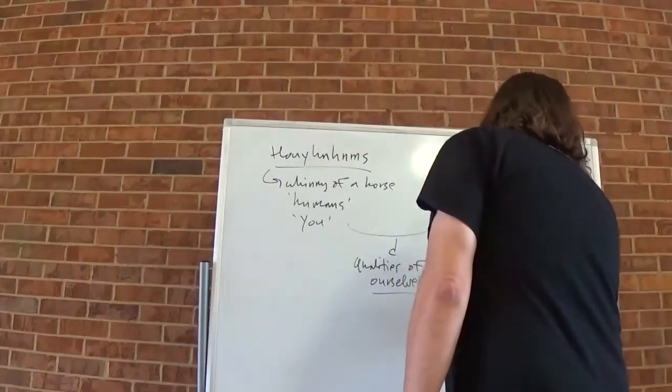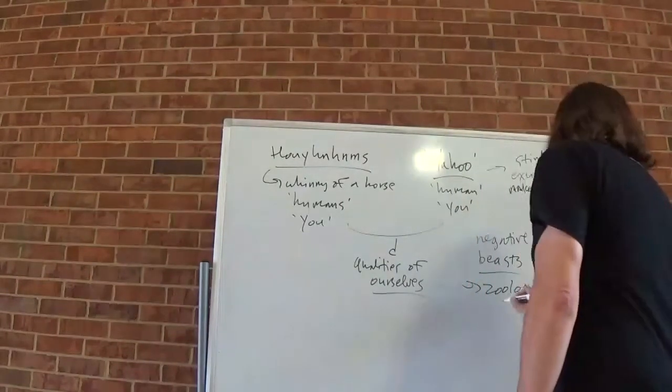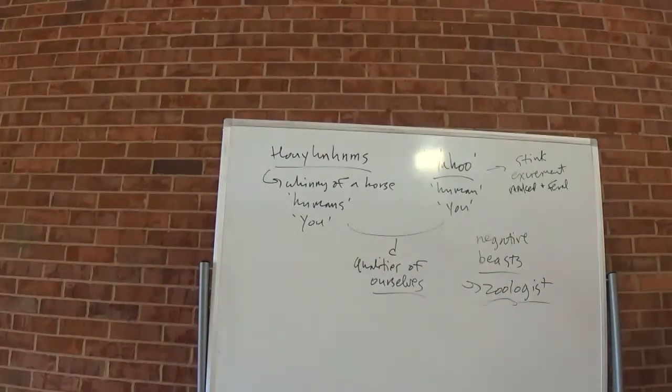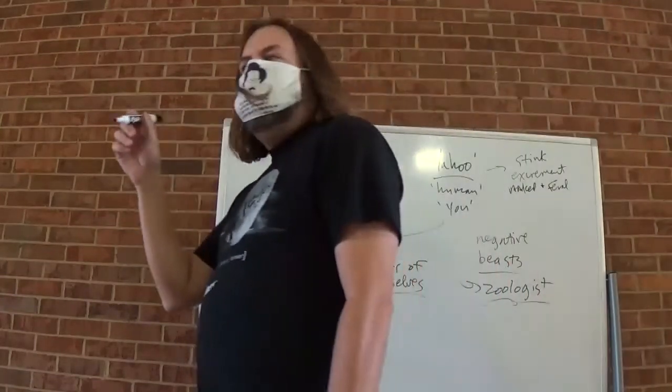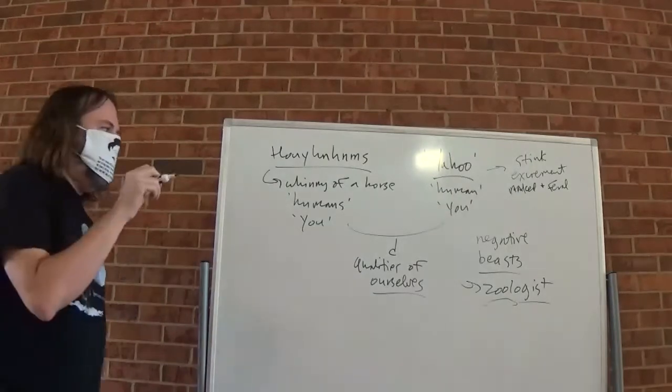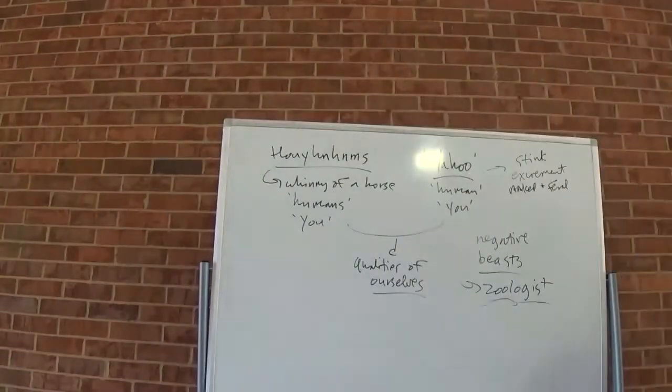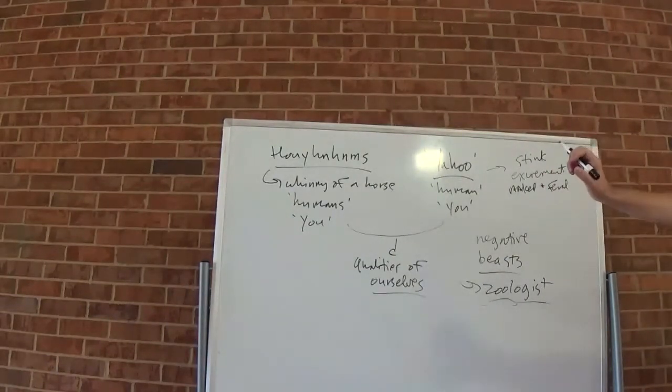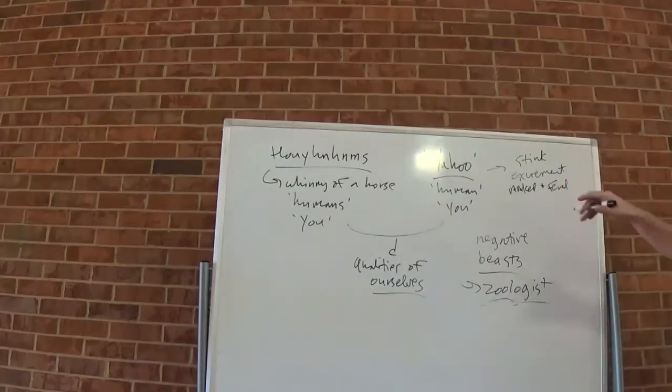You remember we talked last time a little bit about Marco Polo describing a rhinoceros as a unicorn. Because he's putting it into a frame of reference. He's putting an unfamiliar creature into a frame of reference he can understand. A familiar frame of reference. Gulliver is doing something maybe a little bit similar here. Although, in this case, the creature is actually familiar, what has been defamiliarized by having its clothing and civilization torn away. And being covered with its own excrement.